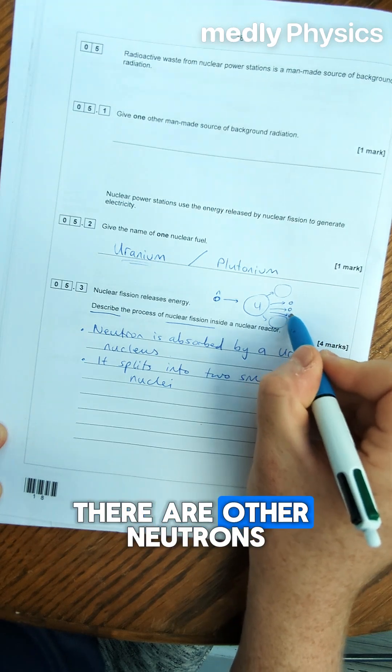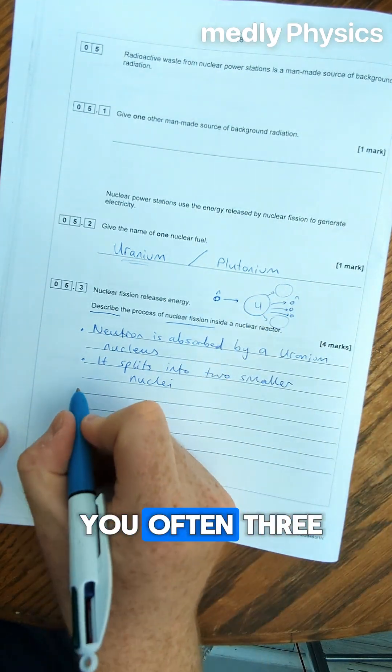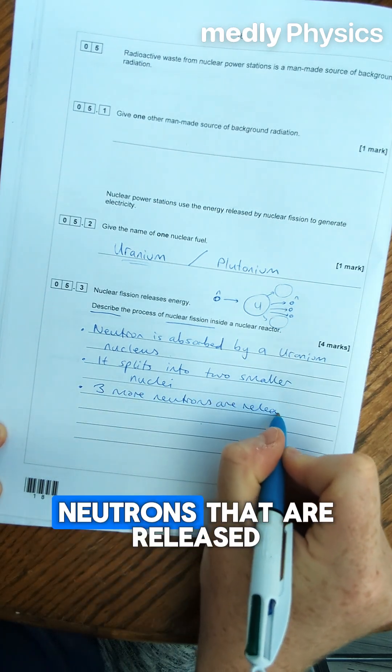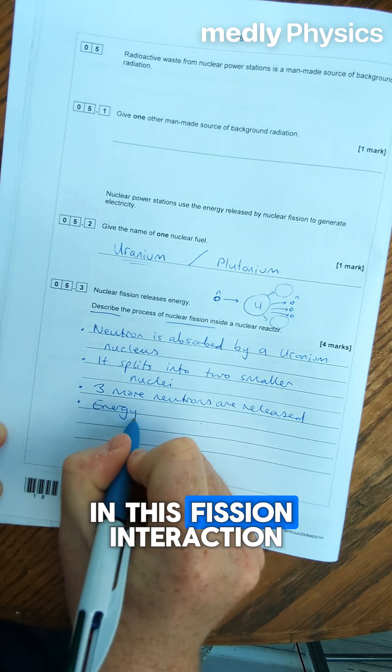Now when this happens there are other neutrons that are released. It's often three but sometimes two sometimes four. So we could say there are three more neutrons that are released in this fission interaction.